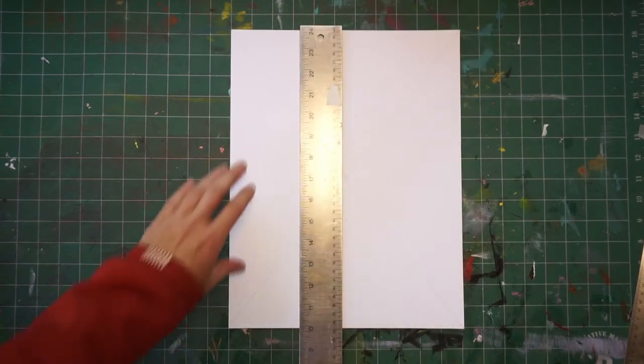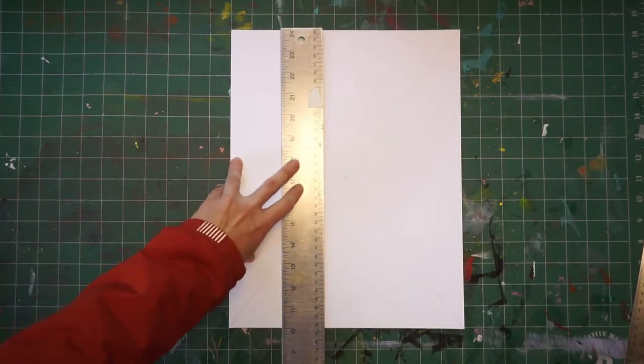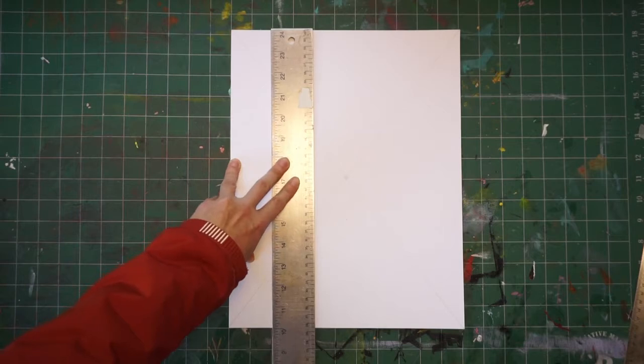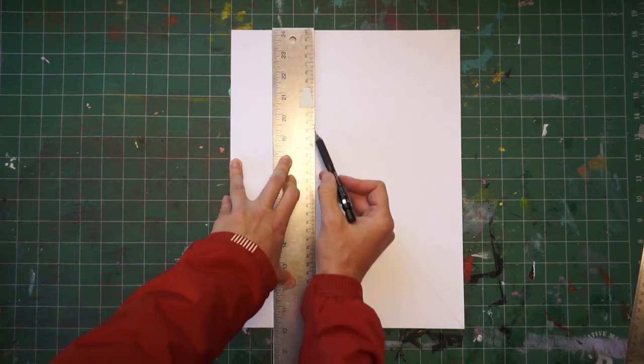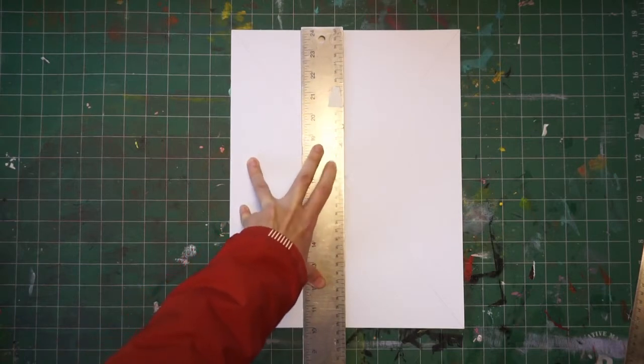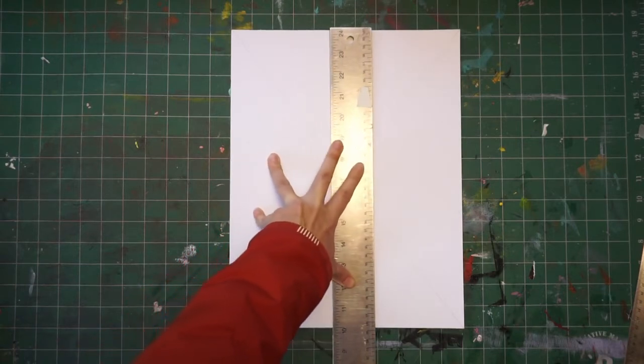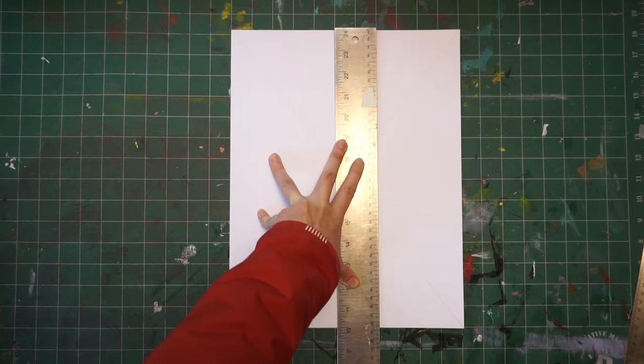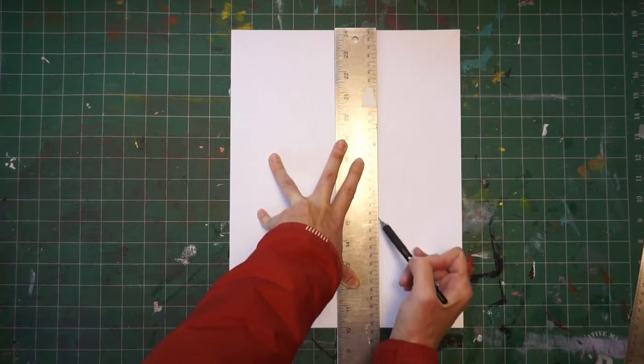Before I come in with my X-Acto knife, I like to give myself a guide. I'm going to lay in lines so that I can see where I'm cutting and double-check that my measurements are correct. Very light lines. This is a great habit to establish for yourself. Later, if you're matting your work, you might drop 40 or 60 bucks on a nice mat.